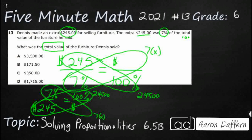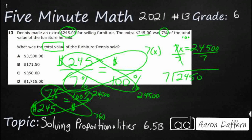So 7x equals 24,500. To isolate the variable, divide both sides by 7. Now we need to do a little long division: 24,500 divided by 7. 7 goes into 24 three times — that's 21. Bring down: 7 goes into 35 five times — nice and even. Bring down the zeros, and it looks like my answer is 3,500.